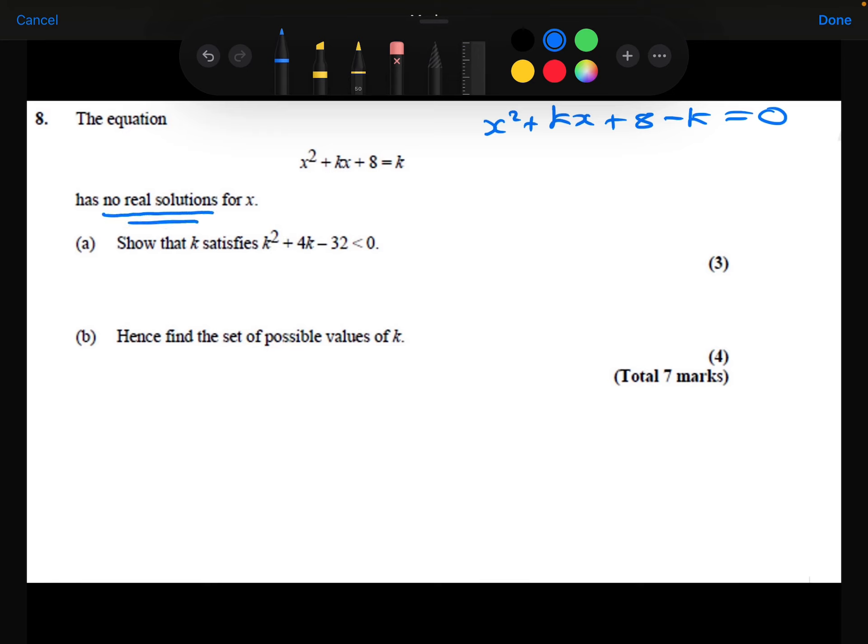Now, the fact that it has no real solutions, that's telling me that the discriminant of this equation, the b squared minus 4ac, has to be negative if there's no real solutions.